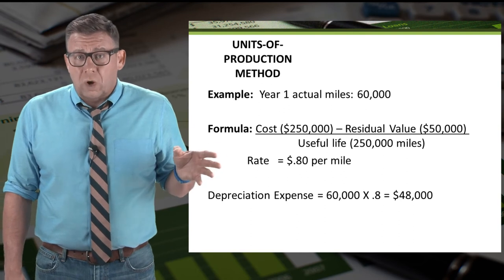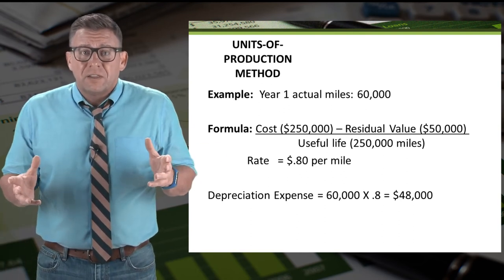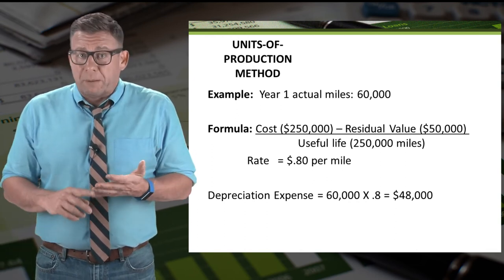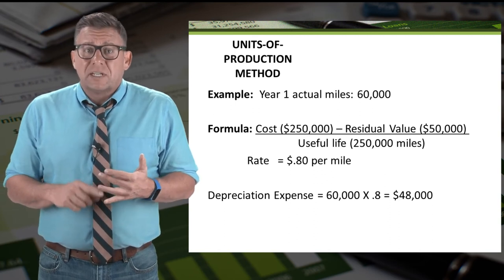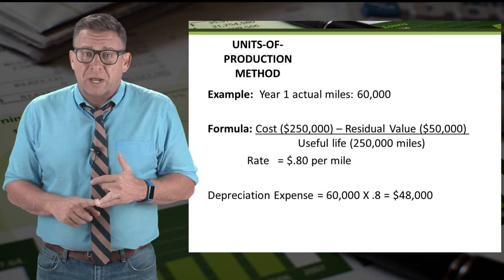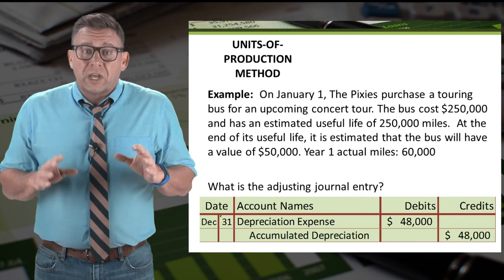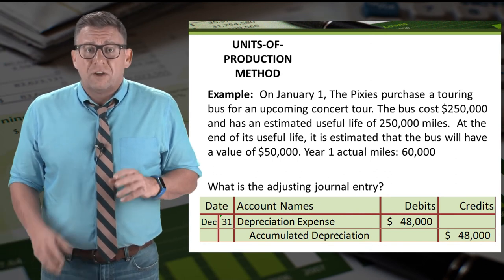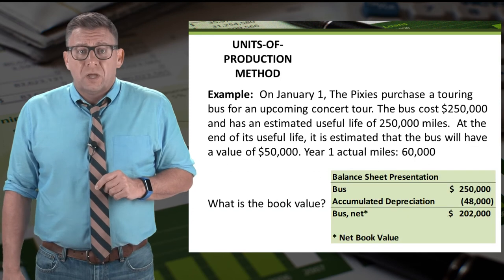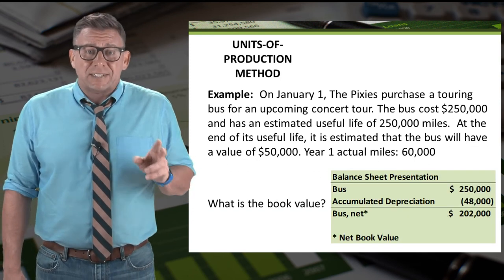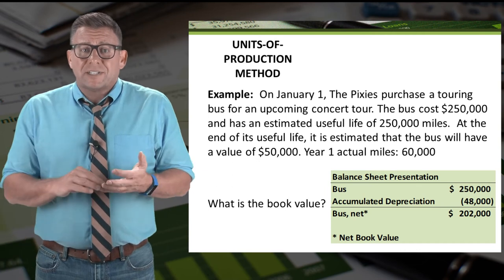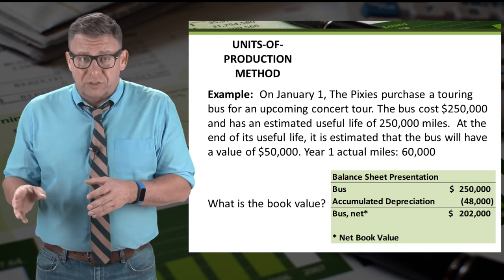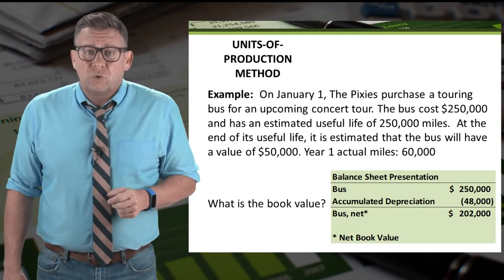If the actual miles in year one were 60,000 miles, then the amount of depreciation expense would have been $48,000. We get this by multiplying 60,000 actual miles times the depreciation rate of $0.80 per mile. We can record the adjusting journal entry by debiting depreciation expense and crediting accumulated depreciation for $48,000. The book value is the cost of the asset minus its accumulated depreciation, so cost of $250,000 minus accumulated depreciation of $48,000 gives us a net book value of $202,000.